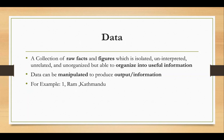So data consists of raw facts and figures — there is no information in data on its own. What we can do is produce information from it. We can organize or relate the data, and then we can manipulate it. So we can use data to create information.